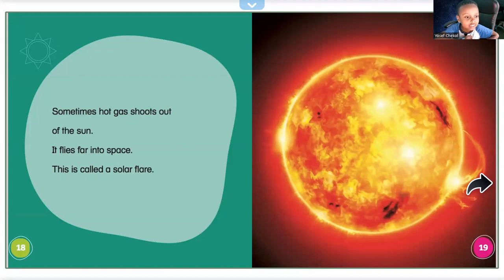Sometimes hot gases shoot out of the sun. It flies far into space. This is called a solar flare.